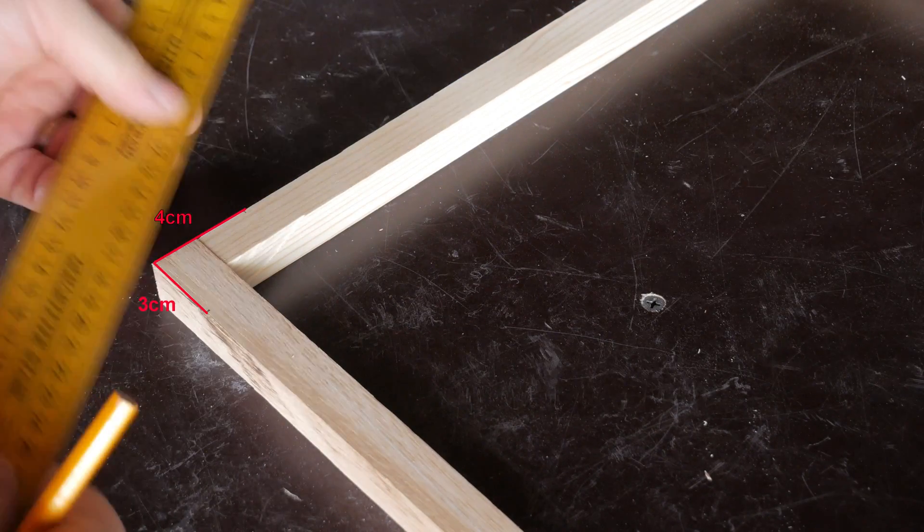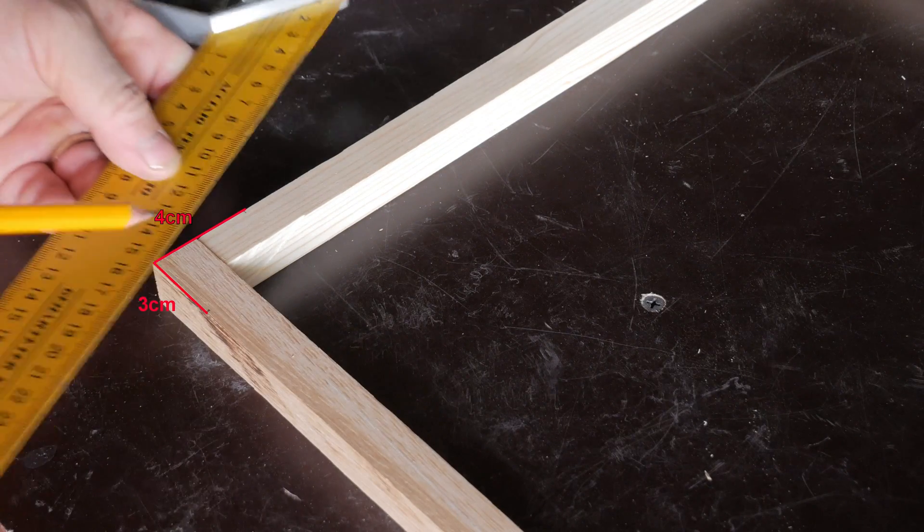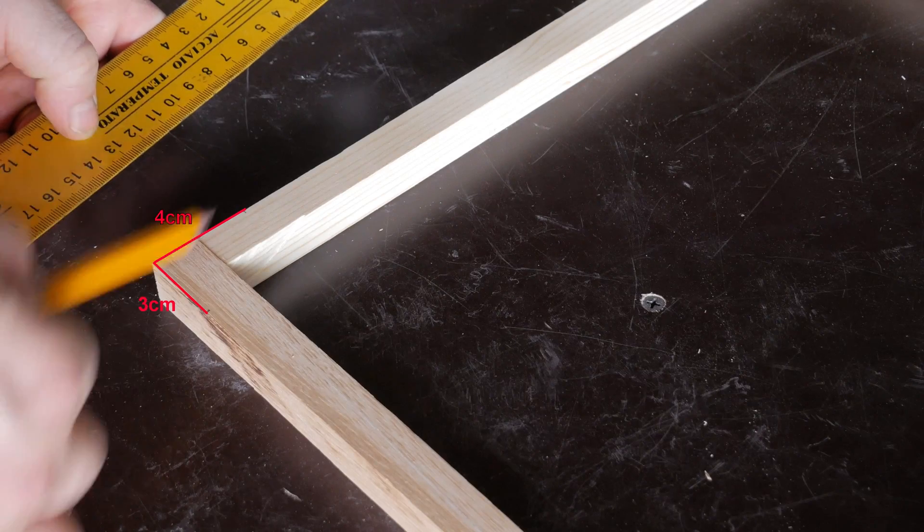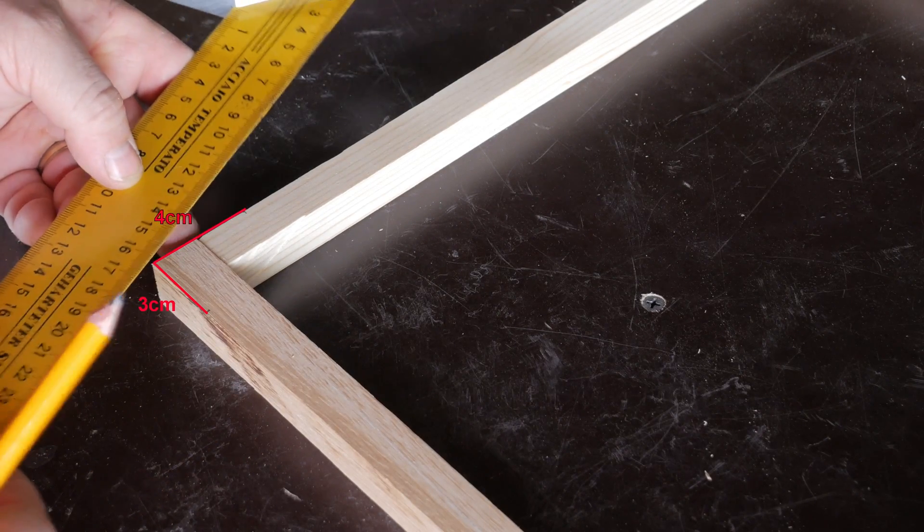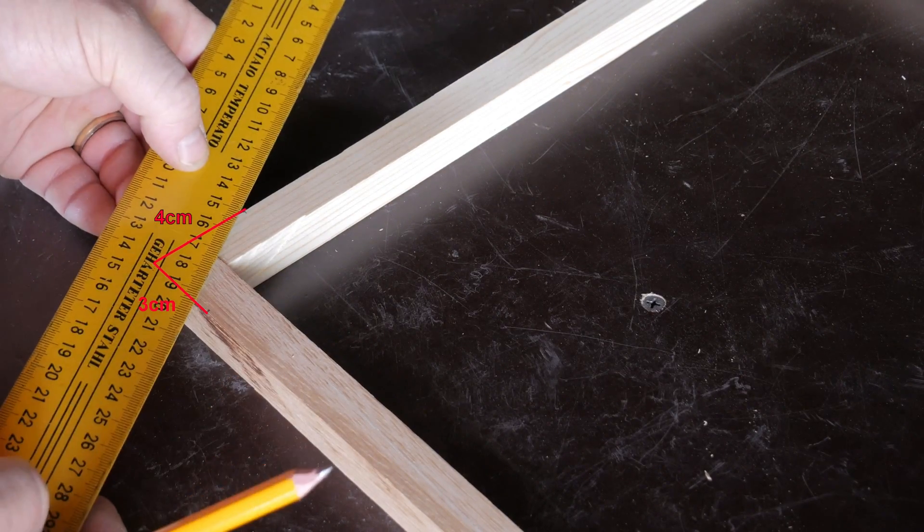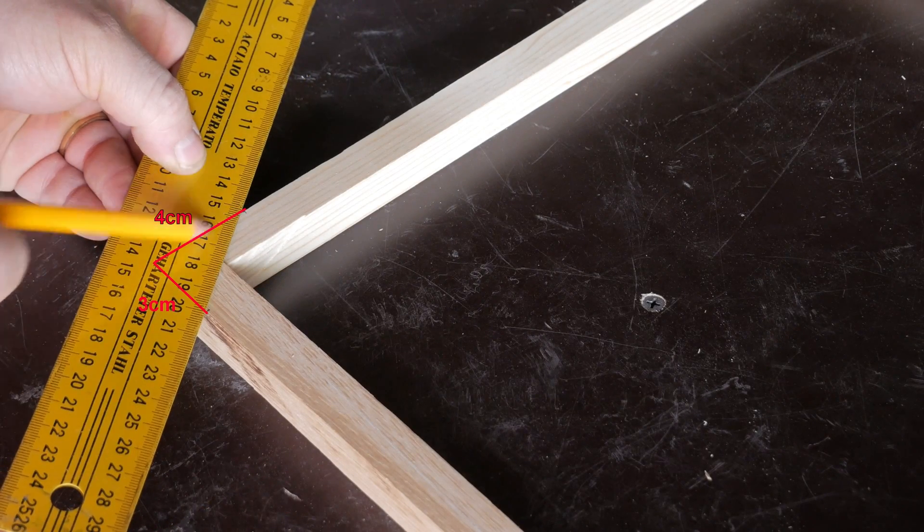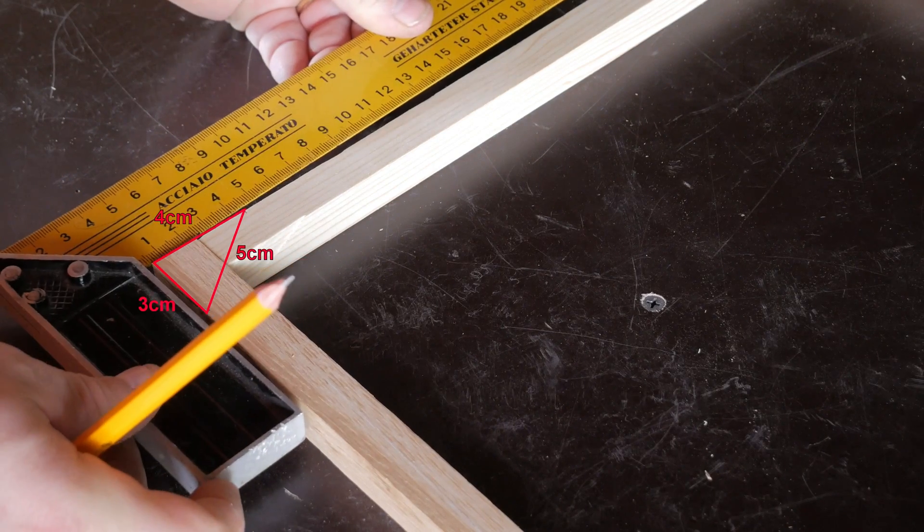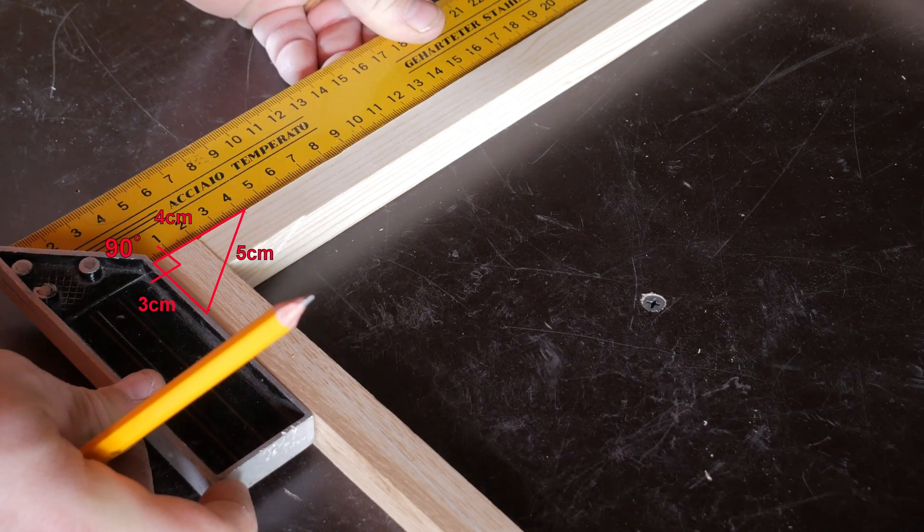So now this line here should be five. If it is five you got a 90 degree angle. Let's start from 15, that is exactly five centimeters, so that means we got a 90 degree angle in here which is true.